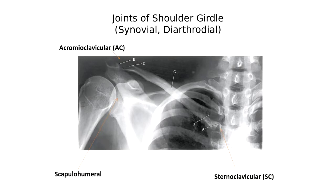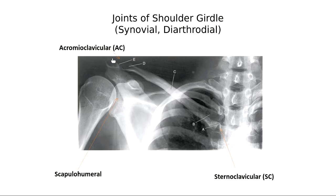Radiographically, the scapulohumeral joint is between the glenoid cavity of the scapula and the humeral head. The acromion process of the scapula and the acromial end of the clavicle form the AC joint. The sternal end of the clavicle with the sternum makes up the SC joint. Remember, SC joints are where we look to see if a patient is rotated — you can check that they're equidistant and equally open. AC joints are imaged separately, often for sports injuries.